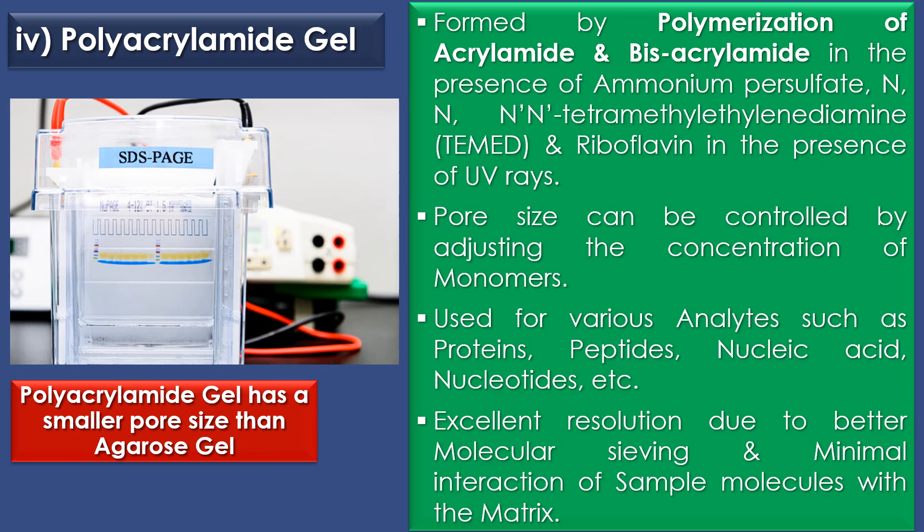The fourth support medium is polyacrylamide gel. Polyacrylamide gel is formed by polymerization of acrylamide and bisacrylamide in the presence of ammonium persulfate, TEMED, and riboflavin in the presence of UV rays. The pore size of polyacrylamide gel can be well controlled by adjusting the concentration of monomers. Polyacrylamide gel can be used for various analytes such as proteins, peptides, nucleic acids, nucleotides, etc., and can provide excellent resolution due to better molecular sieving and minimal interaction of sample molecules with the matrix.